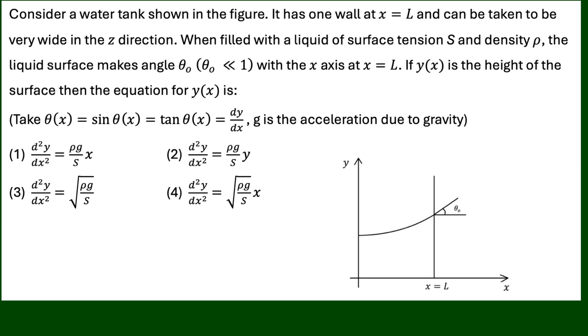Consider a water tank shown in the figure. It has one wall at x equal to L and can be taken to be very wide in the z direction. When filled with a liquid of surface tension S and density ρ, the liquid surface makes an angle θ₀ where θ₀ is much smaller than one radian with the x axis at x equal to L.